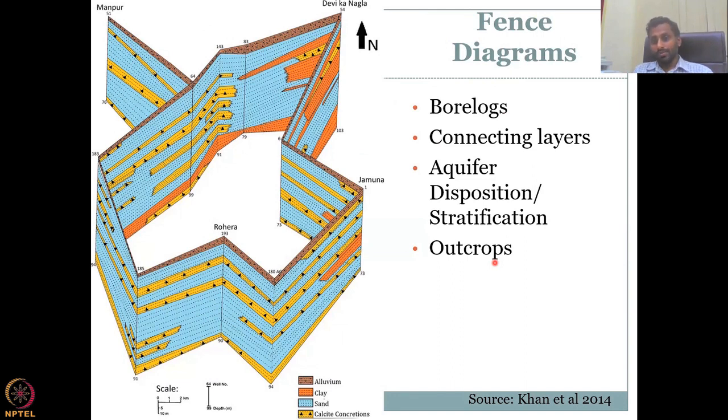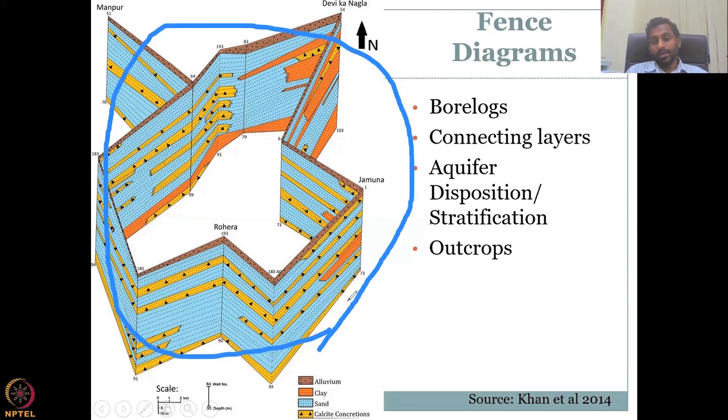These fence diagrams are driven by borelog's data. You can see each borelog data is given on this, each line. Then each line is connected based on the layers. Let's take a boundary for example. So this is your watershed boundary, where you had all these wells. This is the well or your borelogs. You have all these borelogs in your watershed boundary and you try to see how the layers are matching between each other.